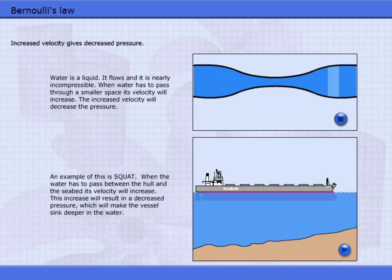When the water has to pass between the hull and the seabed, its velocity will increase. This increase will result in a decreased pressure, which will make the vessel sink deeper in the water.